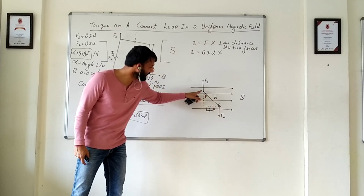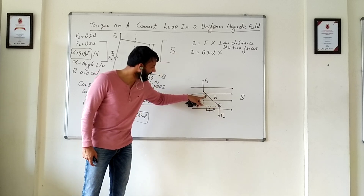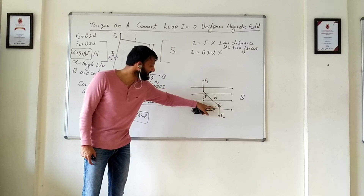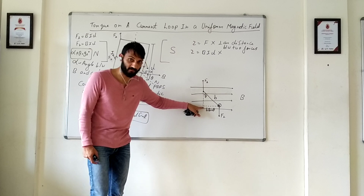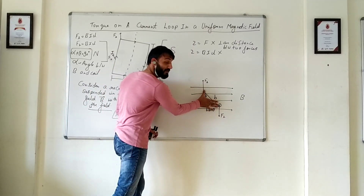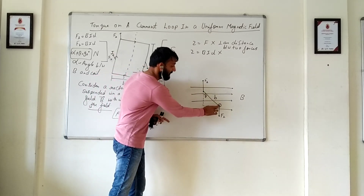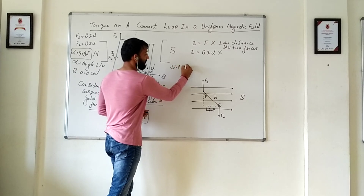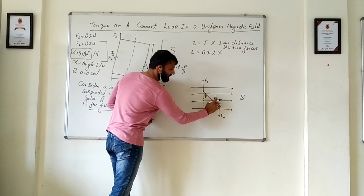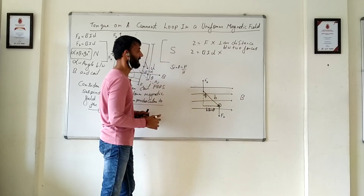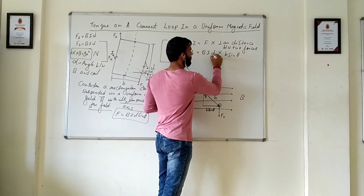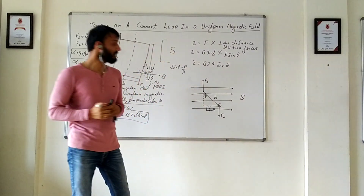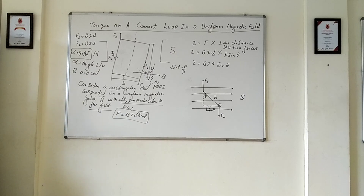If I assume this angle to be theta and complete the triangle, the hypotenuse is B (the breadth), and I want the perpendicular distance between the two forces. Since sine theta equals perpendicular over hypotenuse, the perpendicular distance is B sine theta. So torque = BIL × B sine theta. Since L times B equals area A, tau equals B × I × A × sine theta.